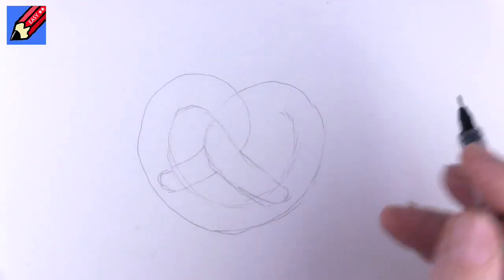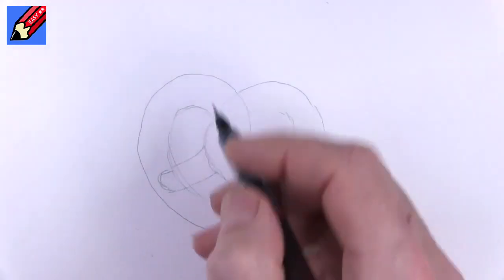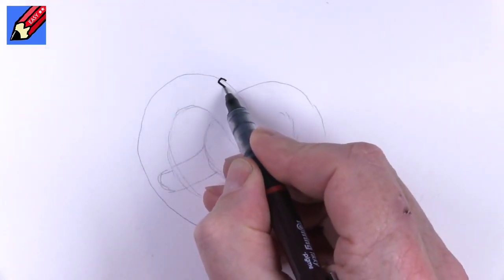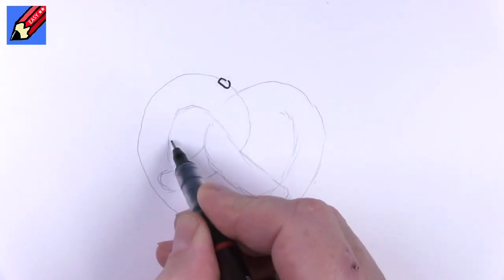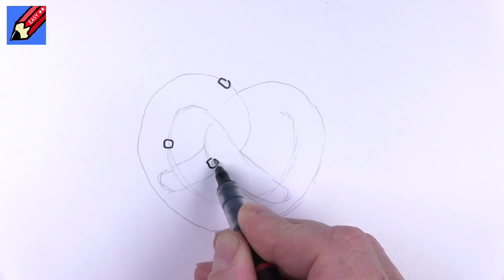Now before you ink it in, this is going to be covered in salt crystals, and some of those salt crystals will be going over the edge of the line. Try doing some like that, maybe a bit across there.